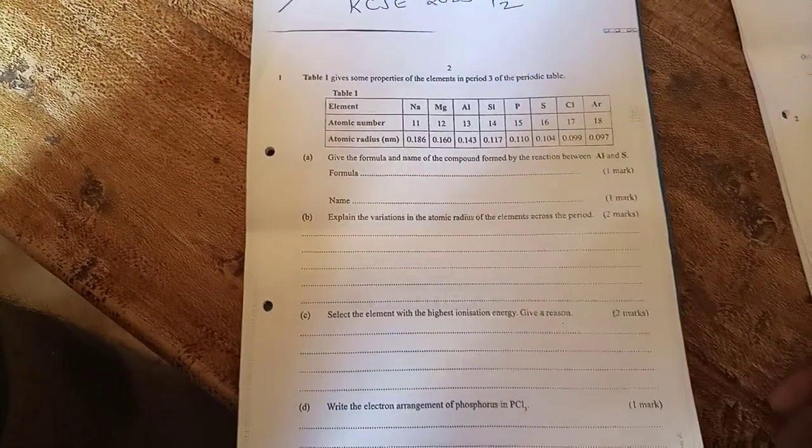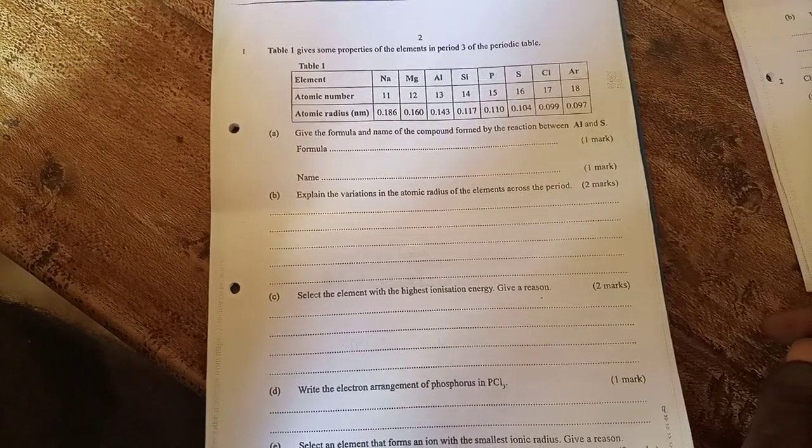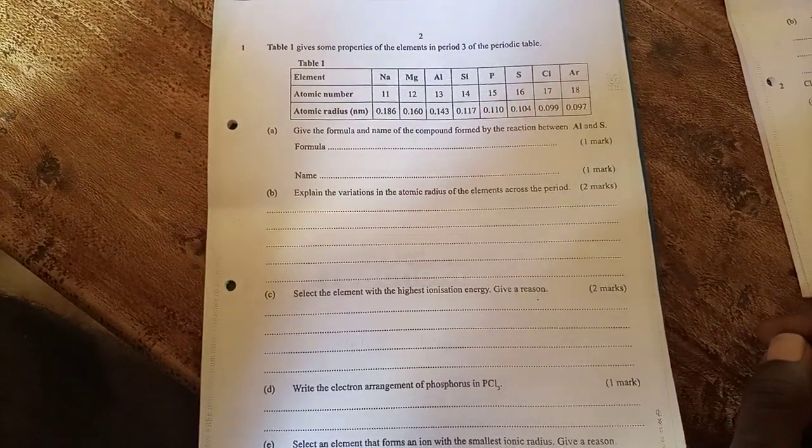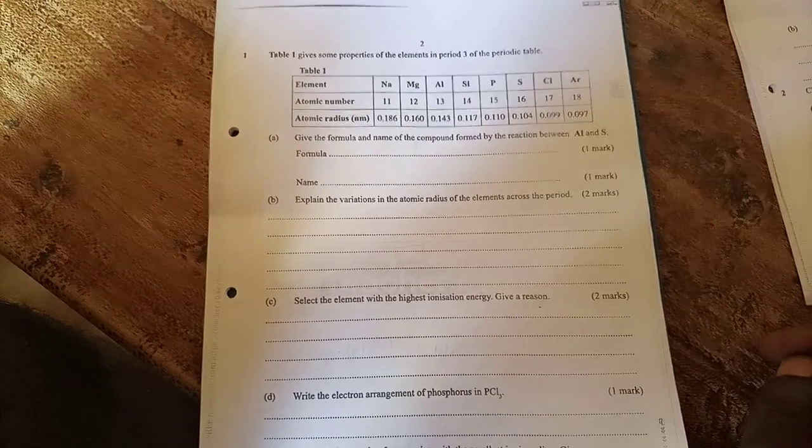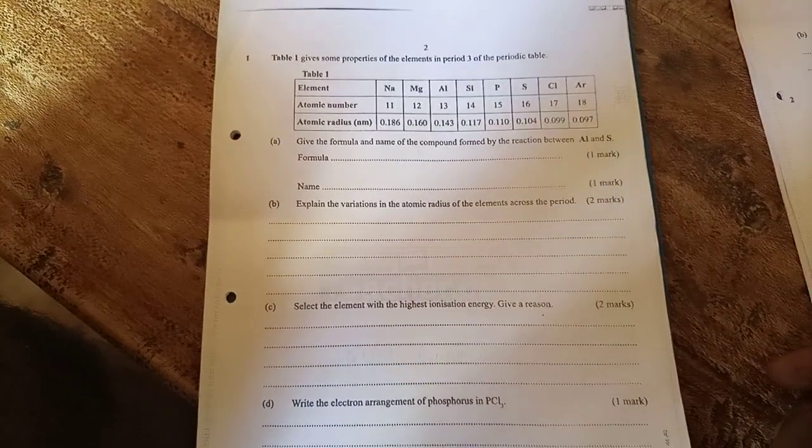Hello learners, let's tackle question 1, KCC 2023, paper 2. The question says, give the formula and the name of the compound formed when aluminum and sulfur reacts. This is form 2, chemical formulas.